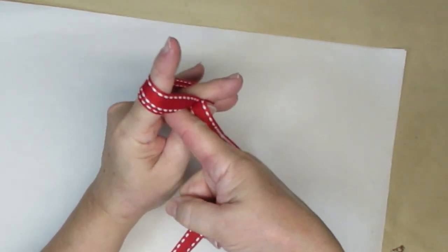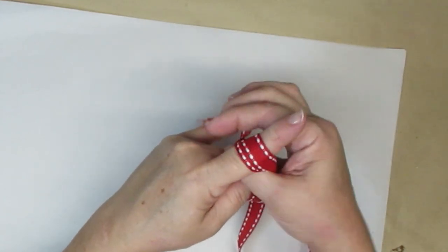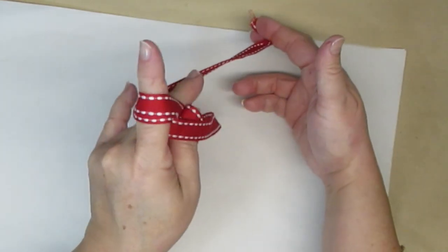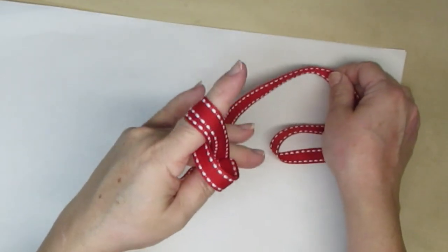There will be an opening underneath the ribbon in between your first and middle finger. Take the other end of the ribbon and push it through that hole at the bottom of the loop.